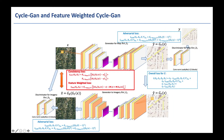The base CycleGAN model uses two sets of generator and discriminator networks, and the two sets of networks are connected by a cycle consistency loss.